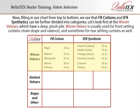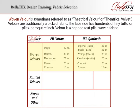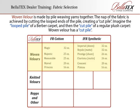Let's look first at the woven velours, which have a deep, plush pile. Woven velour is usually used for front setting curtains — main drape and valance — and sometimes for rear setting curtains as well. Woven velour is sometimes referred to as theatrical velour or theatrical velvet. Velours are traditionally a napped fabric; the face side has hundreds of tiny tufts or piles per square inch. Woven velour is made by pile weaving yarns together, and the nap is achieved by cutting the looped ends of the pile, creating a cut pile.